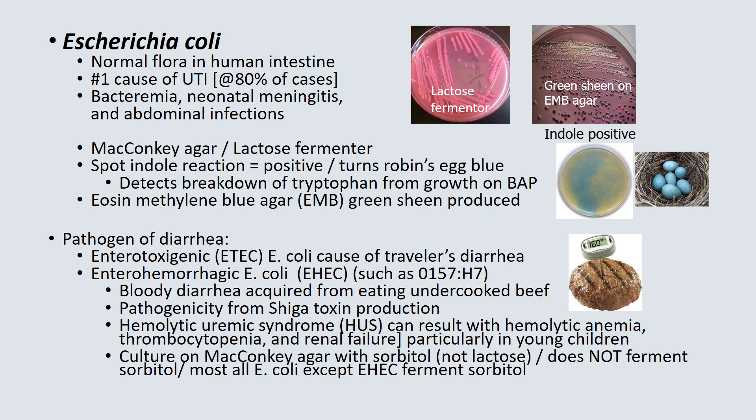E. coli is also a pathogen of diarrhea. It can be enterotoxigenic E. coli (ETEC), which is the primary cause of traveler's diarrhea. A more serious type is enterohemorrhagic E. coli (EHEC), most notably O157:H7, though there are many serotypes. This diarrhea can be bloody and is normally acquired from eating undercooked beef, particularly hamburger. The pathogenicity is from two types of Shiga toxin. Beyond diarrhea, it can progress to hemolytic uremic syndrome, causing hemolytic anemia, thrombocytopenia, and renal failure, particularly in young children.